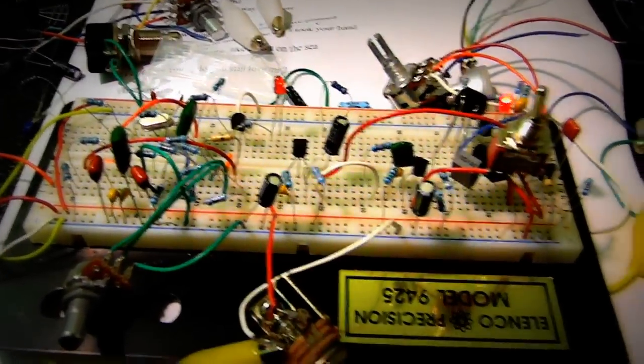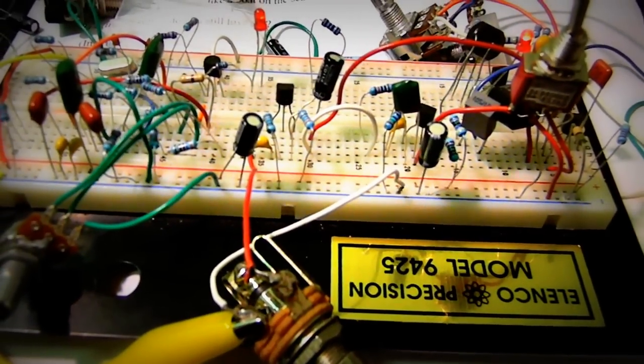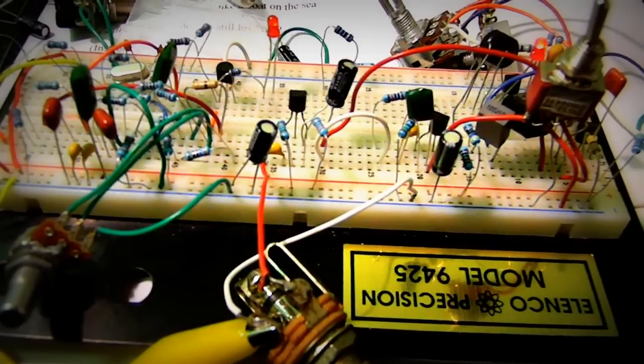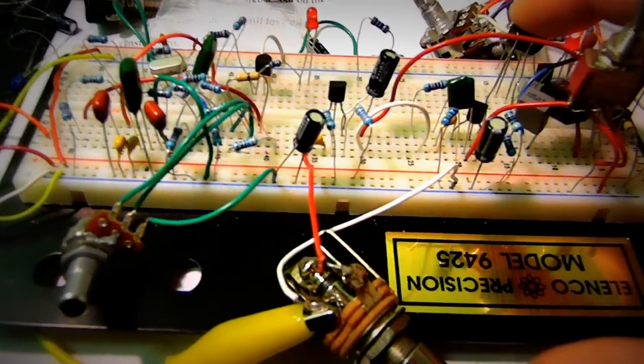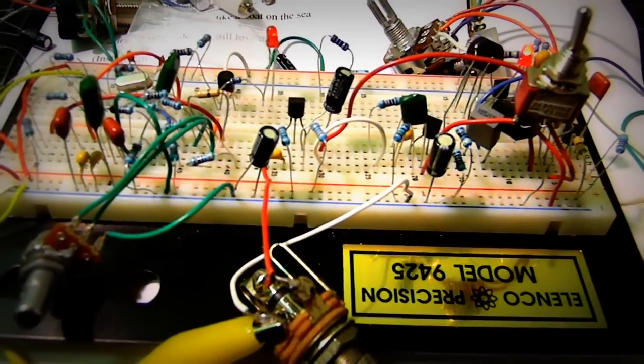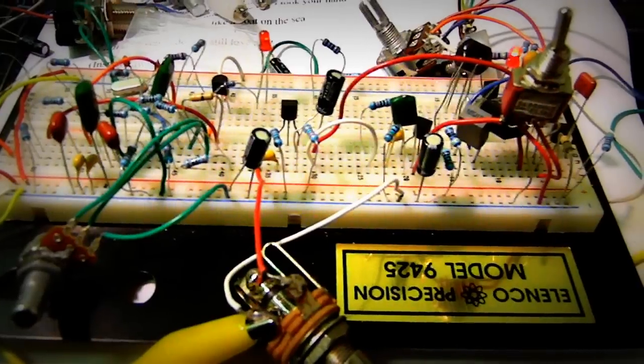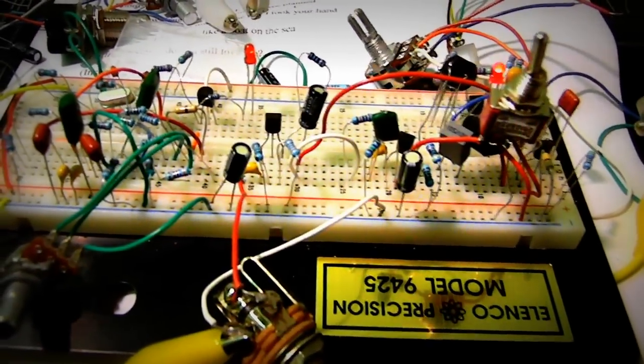SmallBear also carries a clone of this for like six dollars, which is not that much more expensive than just getting a good light dependent resistor and pairing it up with an LED. And also I tend to get a whole bunch of them at one time from a guy named Apex Junior up in Canada, so Canadians take note, he has a really good price on these.